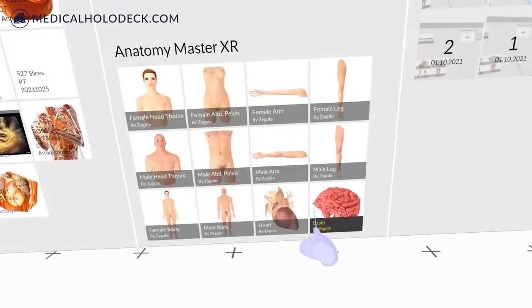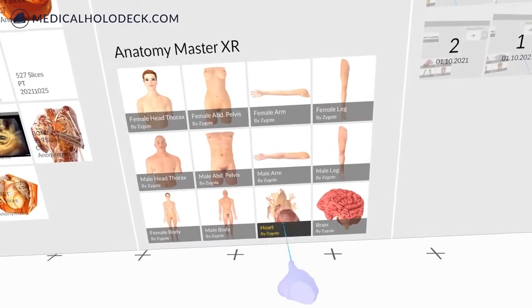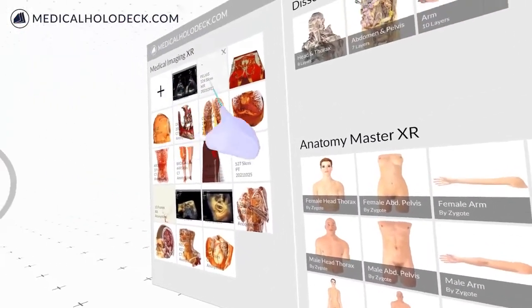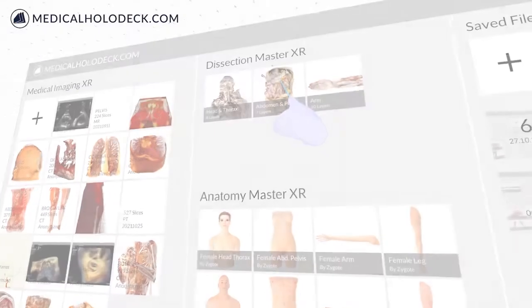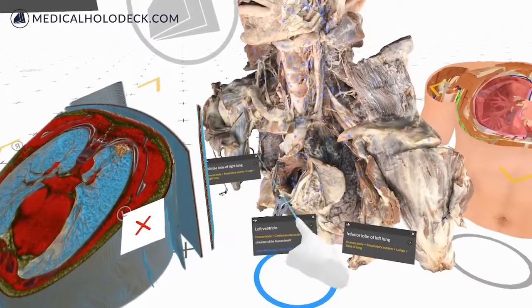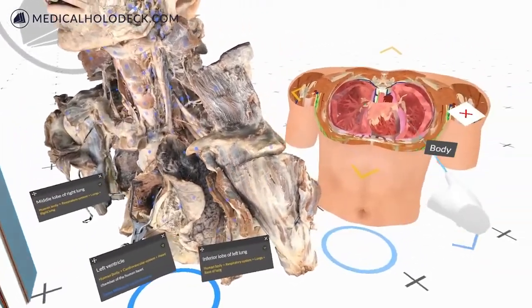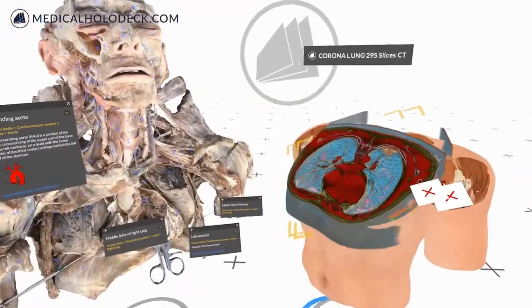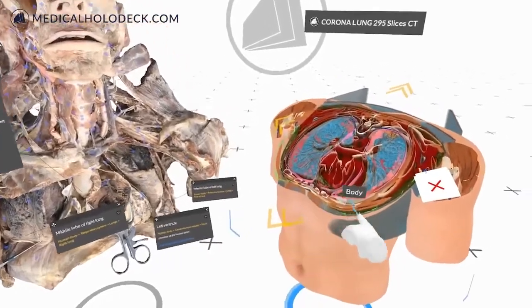Furthermore, there are different anatomical models available so that you can compare them with other Medical Holodeck applications. Visualizing and comparing medical images, digital cadaveric dissection, and anatomical atlases had never been easier. This interaction creates a perfect environment for learning integrated human anatomy and reviewing professionally diverse clinical cases.